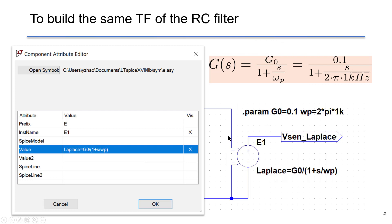In this case, we use parameters to make it easy to read. We have two parameters. The first one is G0 as 0.1, that's the DC gain. The second one is Omega P. We put WP, which is 2 times pi times 1k. And LTspice supports the constant. For example, we can use PI as pi constant.